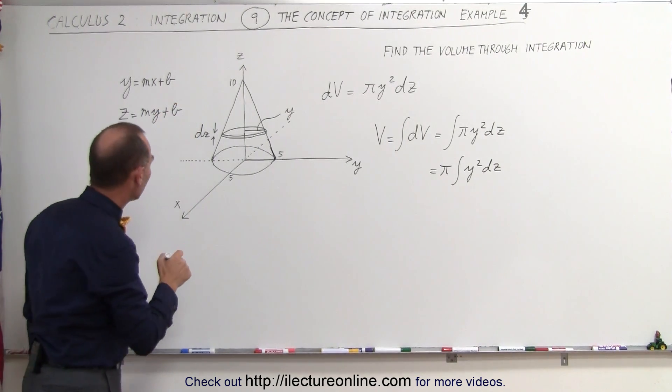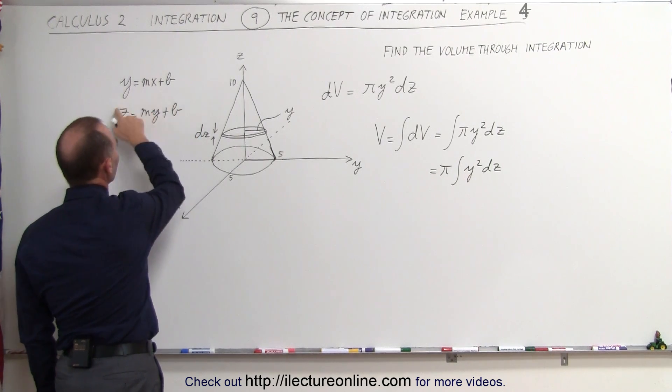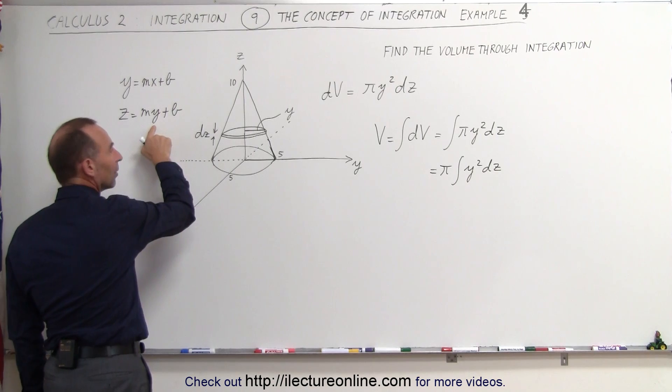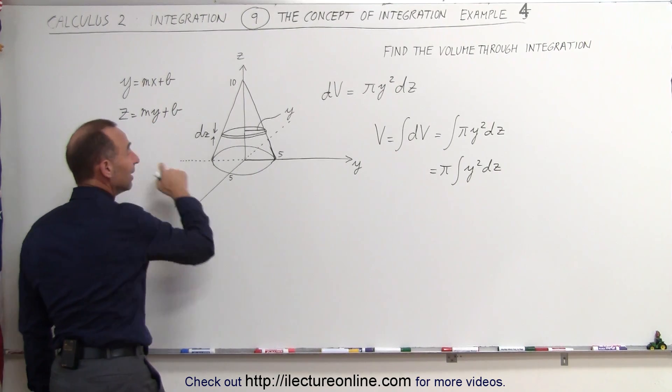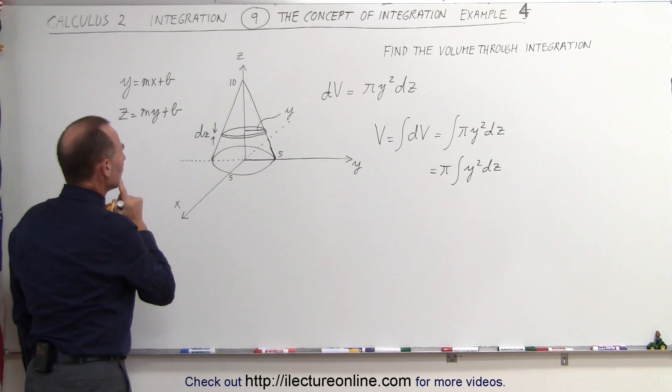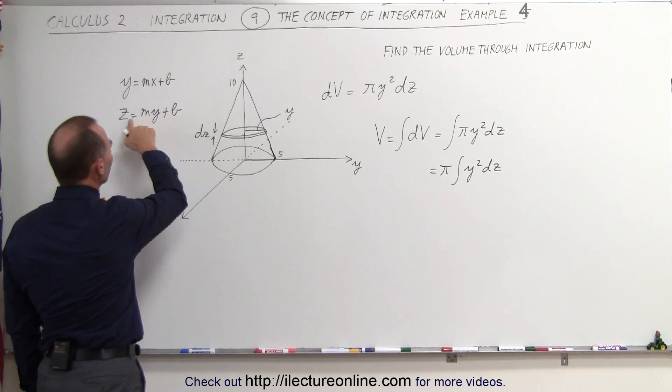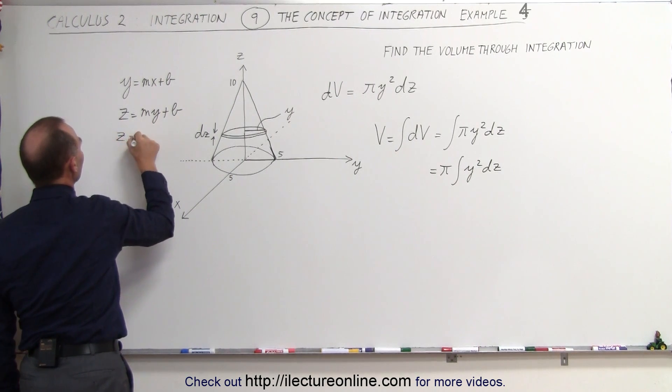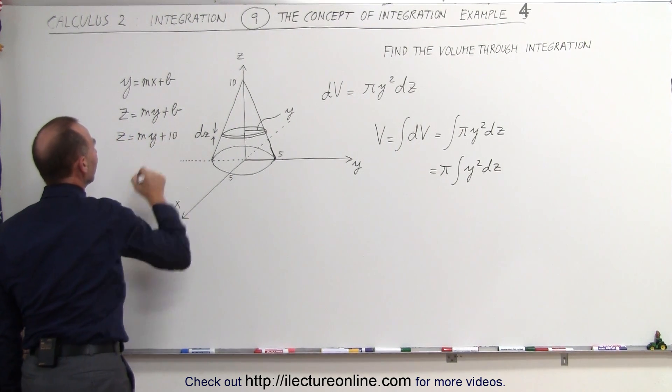Now, all we have to do is find m and find b, and now we have a relationship between z and y. We can then replace y by z, and then we can go ahead and integrate that. b is what we call the z-intercept, and that happens at 10. So we can say that z is equal to m times y plus 10.